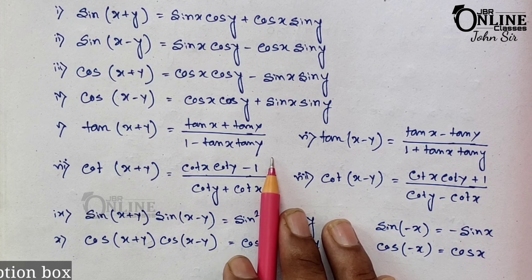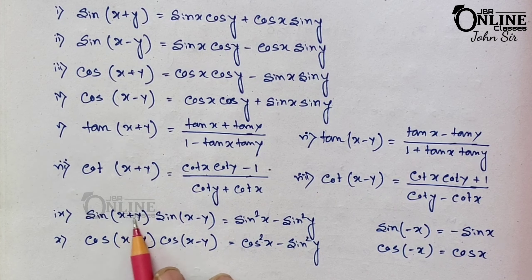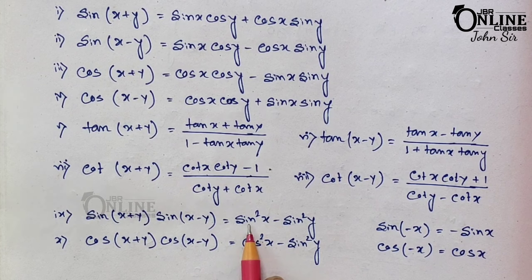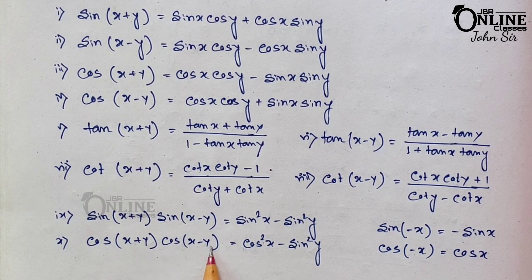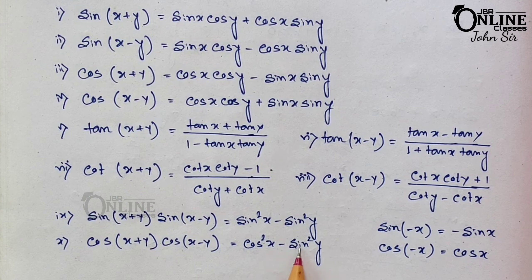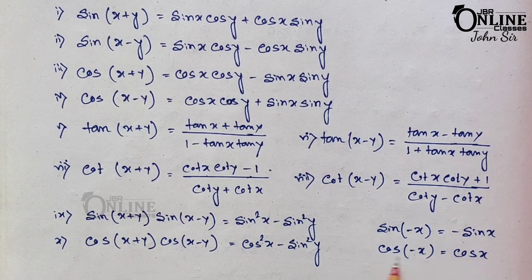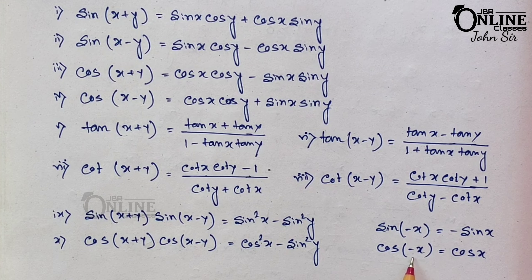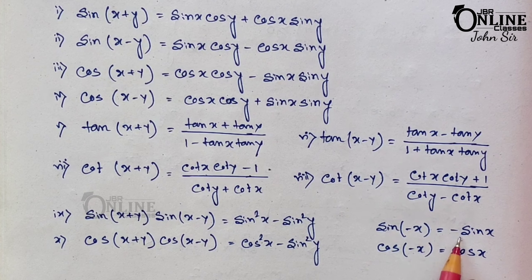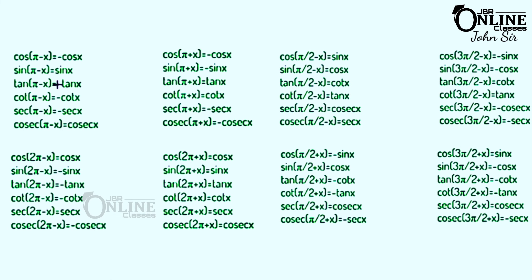Also note: sin(x+y)·sin(x−y) = sin²x − sin²y; cos(x+y)·cos(x−y) = cos²x − sin²y. And remember: sin(−x) = −sin x, but cos(−x) = cos x — for cosine the minus is neglected, but for sine and tangent the minus remains.